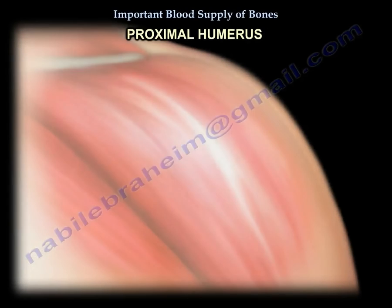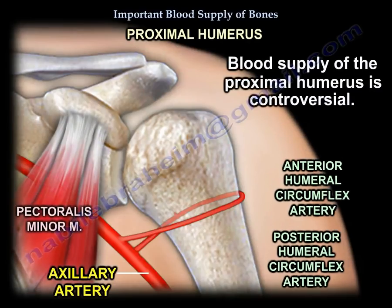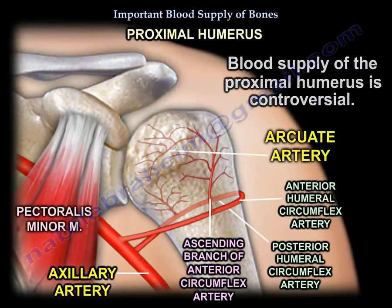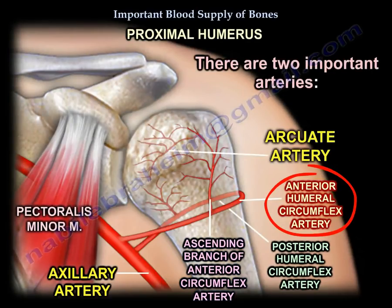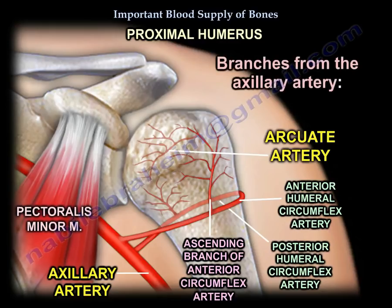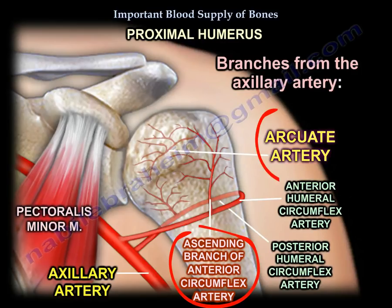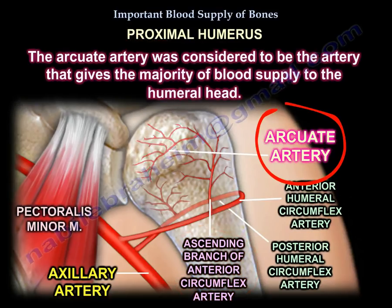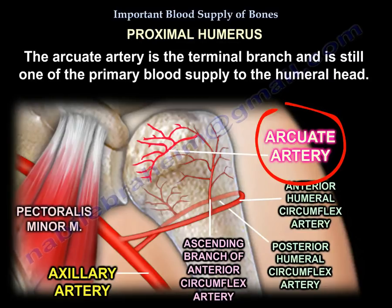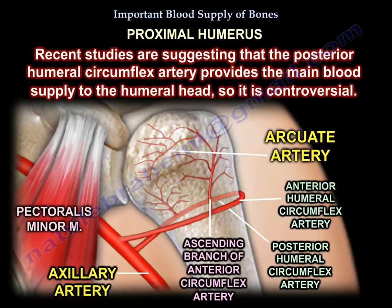The blood supply of the proximal humerus is controversial. There are two important arteries: the anterior humeral circumflex artery and the posterior humeral circumflex artery, both branches of the axillary artery. The ascending branch of the anterior circumflex artery and the arcuate artery were previously considered to provide the majority of blood supply to the humeral head. However, newer evidence suggests the posterior humeral circumflex artery provides the main blood supply, making this topic controversial.